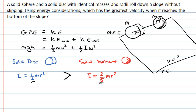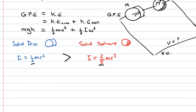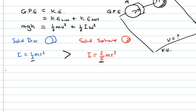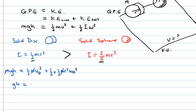Consider which object might have the greatest velocity at the bottom — but rather than guessing, let's work through the maths. Substituting the moment of inertia for the solid disk into our energy conservation expression gives: Mgh equals one-half mv² plus one-half times one-half mr² times ω² (disk). Mass cancels throughout, leaving: gh equals one-half v²(disk) plus one-quarter r²ω²(disk).